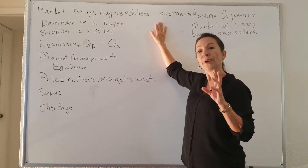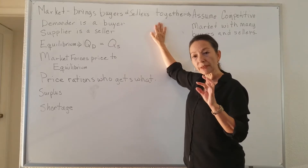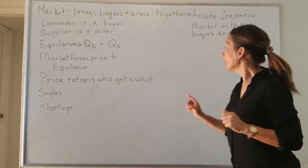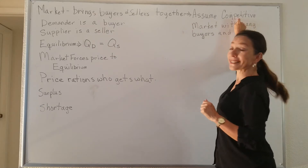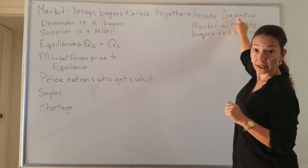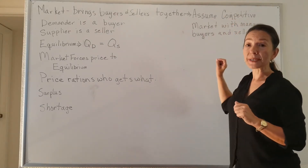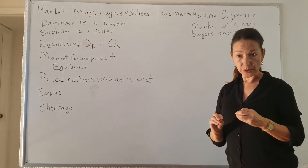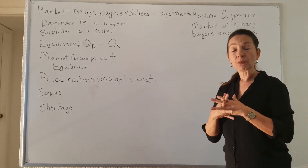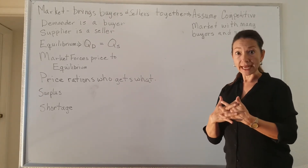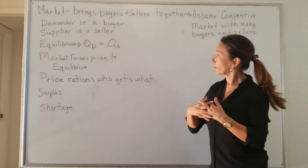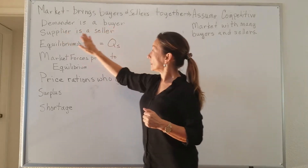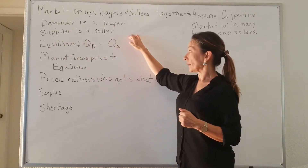In our discussion about the demand and supply model, we have a key assumption: we're assuming that our market is competitive. Competitive markets mean that there are many buyers and sellers in the market engaging in transactions. A demander is a buyer, and a supplier is a seller.